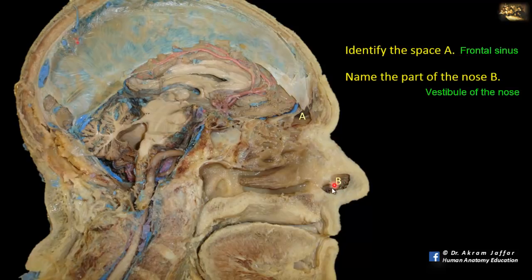The vestibule of the nose is lined with stratified squamous keratinized epithelium. Most of the remaining part of the nose is lined with respiratory epithelium — pseudostratified columnar ciliated epithelium with goblet cells — except the part at the roof, which is lined by olfactory epithelium.